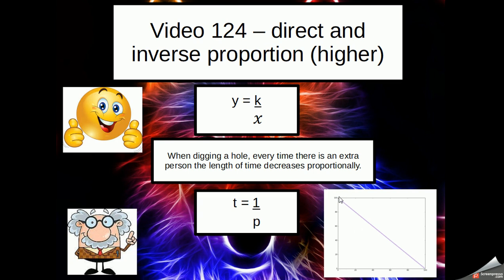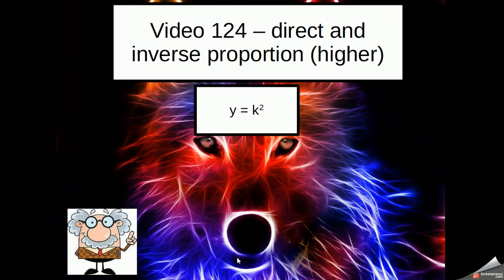An inversely proportional graph then shows the slope going downwards, a diagonal downwards slope.